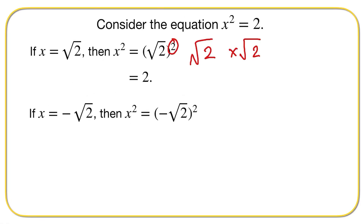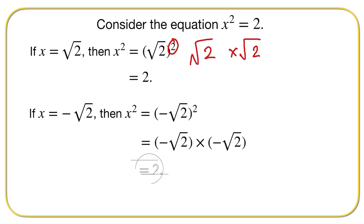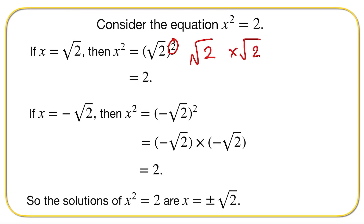We could also have x equal to negative the square root of two, because then x squared would be equal to brackets minus the root of two, all squared. That looks like negative root two times negative root two, which also equals two. So the solutions to x squared equals two are both x equal to plus or minus the square root of two.